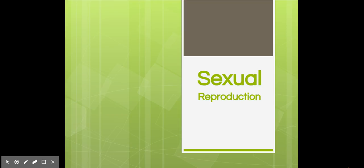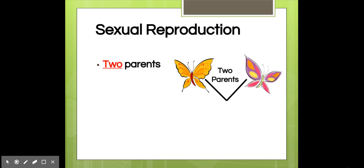Let's talk about sexual reproduction as a form of reproduction used by organisms. The main characteristic is that sexual reproduction involves two parents. It has to be two parents of the same species because you need the same number of chromosomes — so that's why you couldn't cross a rhino and a horse to get a unicorn. Sorry to burst your bubble.